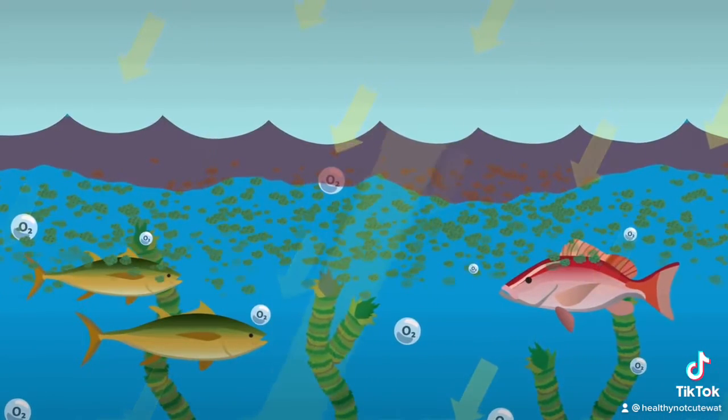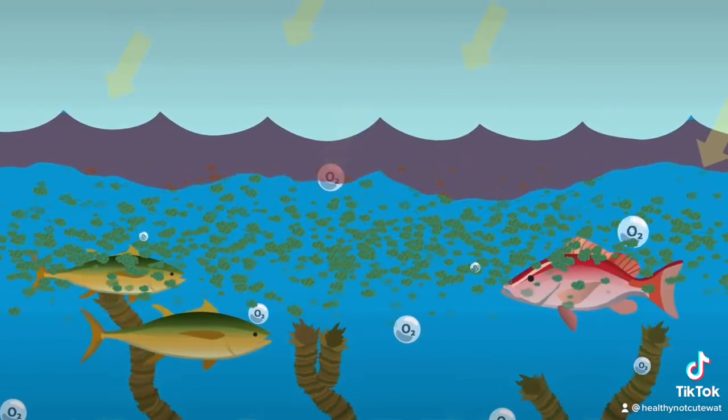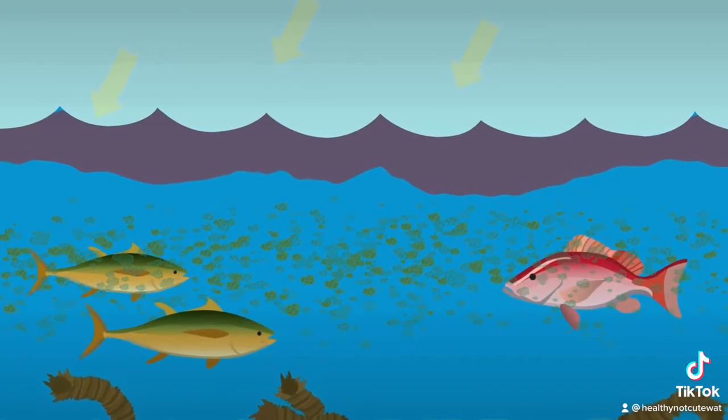Algae grows and blocks sunlight. Plants die without sunlight. Eventually, the algae dies too.